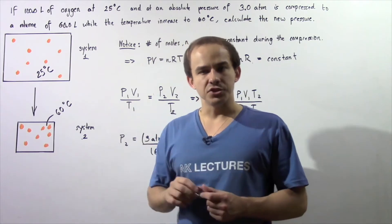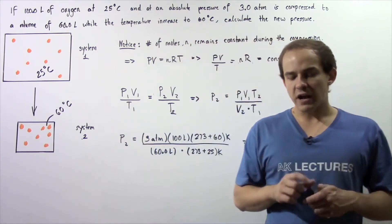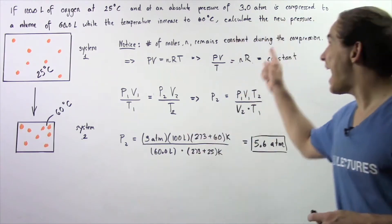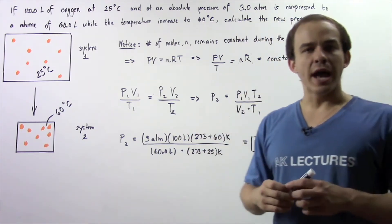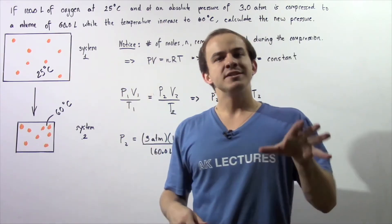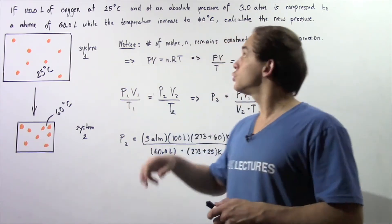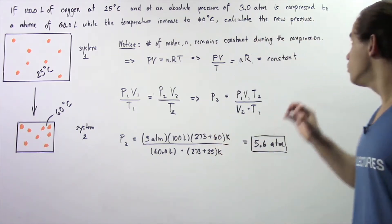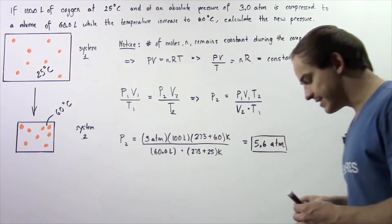If 100 liters of oxygen at 25 degrees Celsius and an absolute pressure of 3 atmospheres is compressed to a new volume of 60 liters and there is an increase in temperature to 60 degrees Celsius, calculate the new pressure of our system.